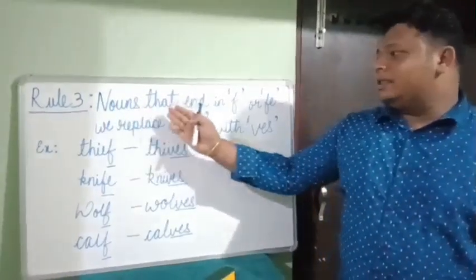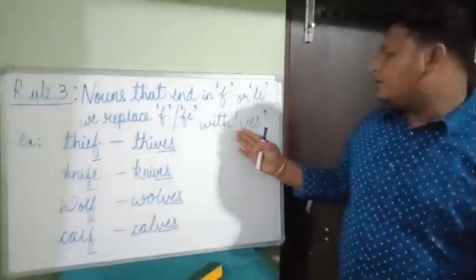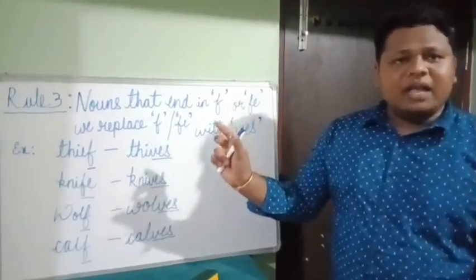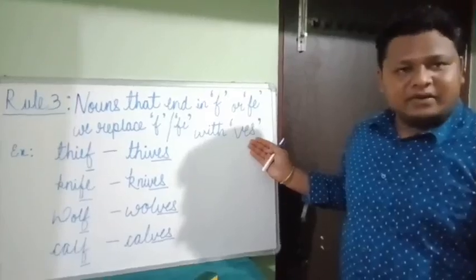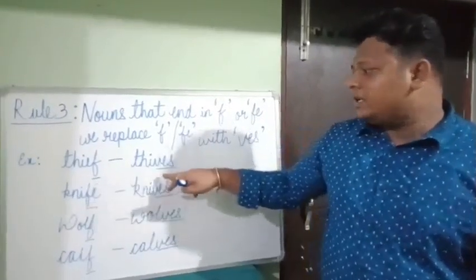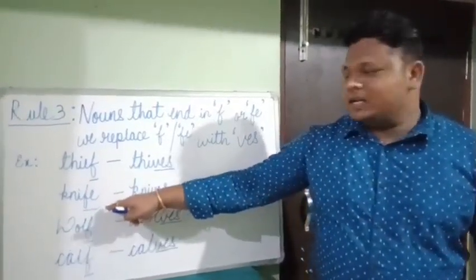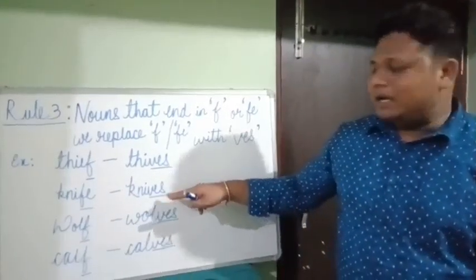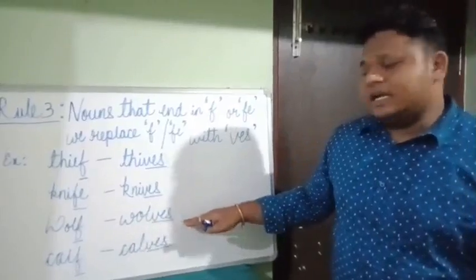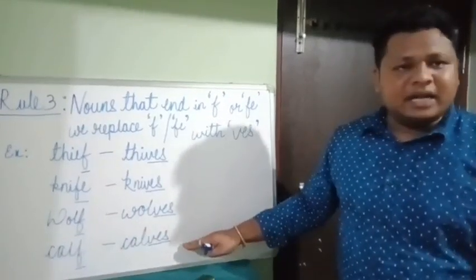Rule number three: nouns that end in F or FE — we replace F or FE with VES. So we remove the F or FE and in its place add VES. For example, thief — F at the end, so we replace F with VES: thieves. Knife — FE at the end, so we replace FE with VES: knives. Wolf — F replaced with VES: wolves. Calf — F replaced with VES: calves.